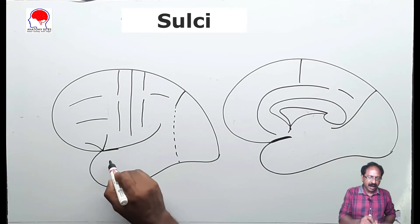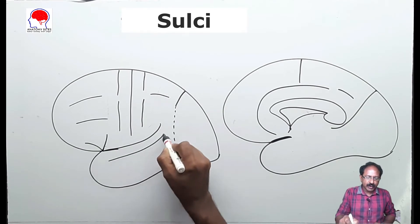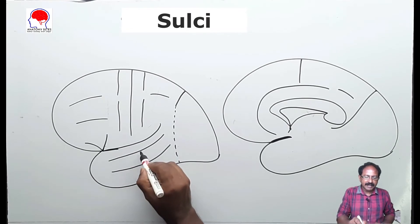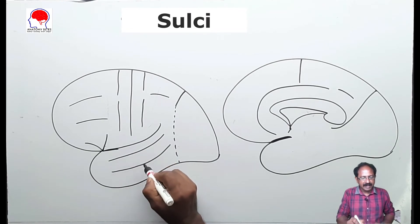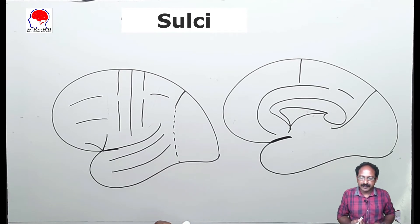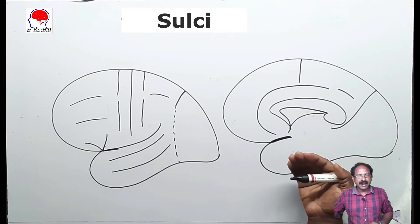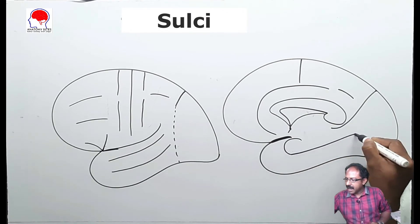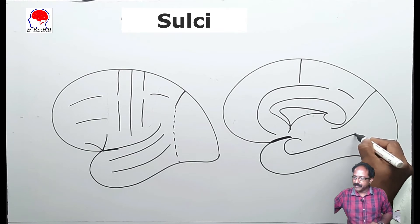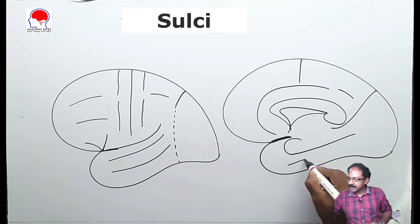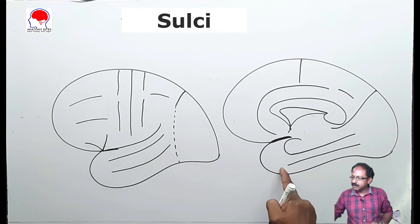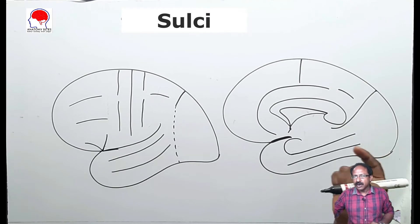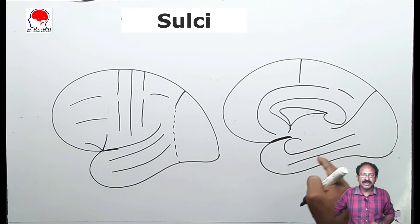In the temporal lobe there are two sulci on the superlateral aspect based on their position: the superior temporal sulcus and the inferior temporal sulcus. On the inferior medial aspect of the temporal lobe, here is the uncus and this is the collateral sulcus. There is another sulcus extending from the temporal to the occipital lobe named as the temporal occipital sulcus, also called the occipitotemporal sulcus.